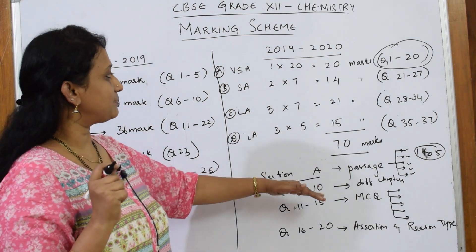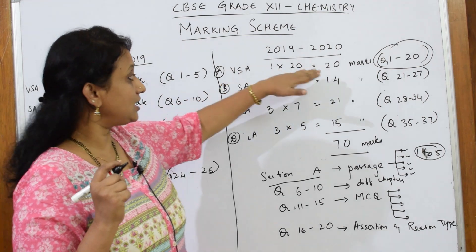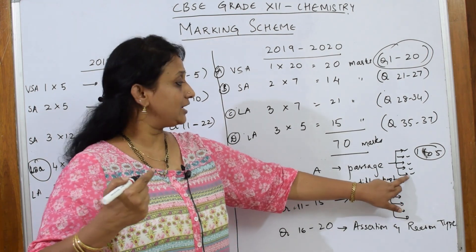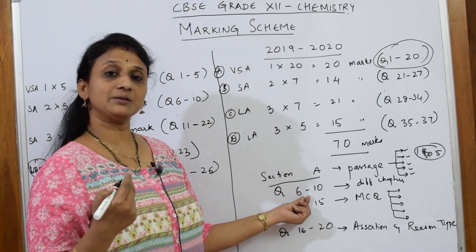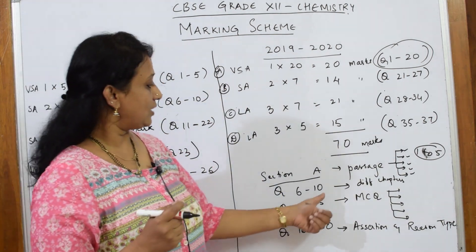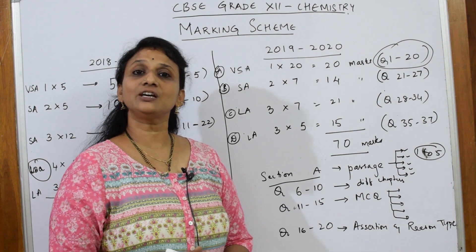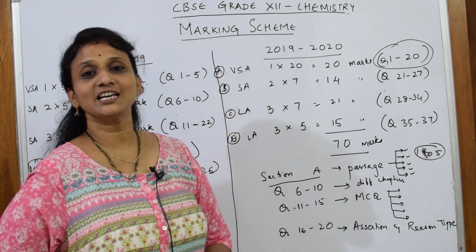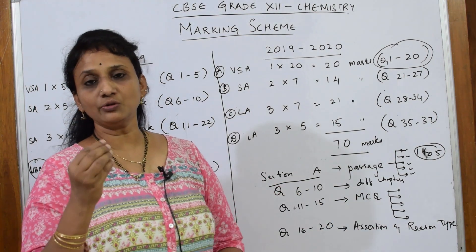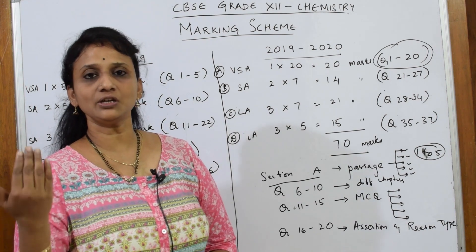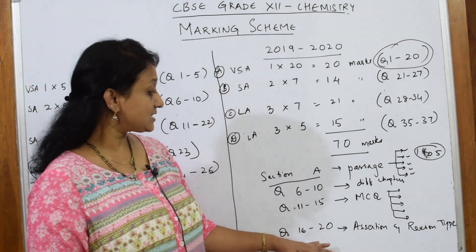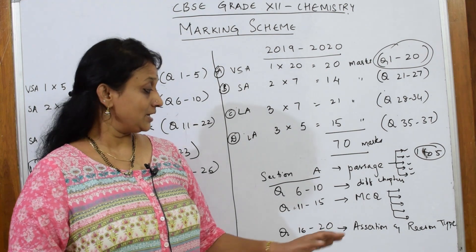After completing questions 1 to 10, from 11 to 15 you'll be given MCQ questions — five multiple choice questions as seen in CBSE board exams, where options A, B, C, D are given and you write the correct option. Scoring five marks here is very easy. Then from 16 to 20, you'll have assertion-reasoning type questions.